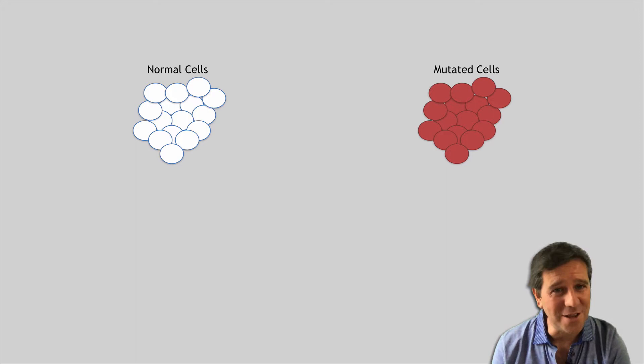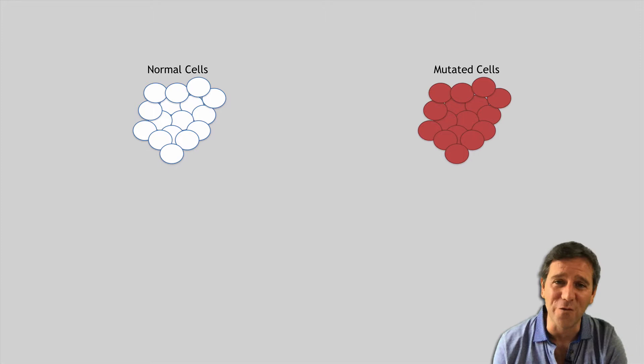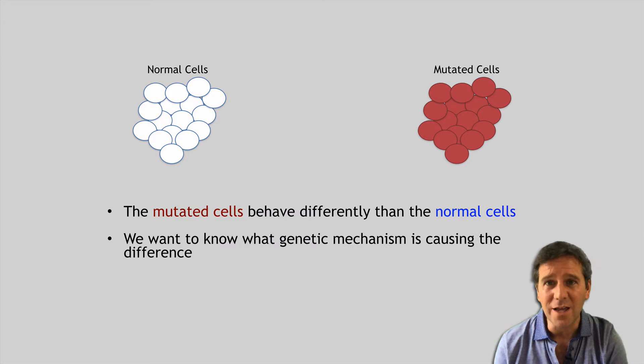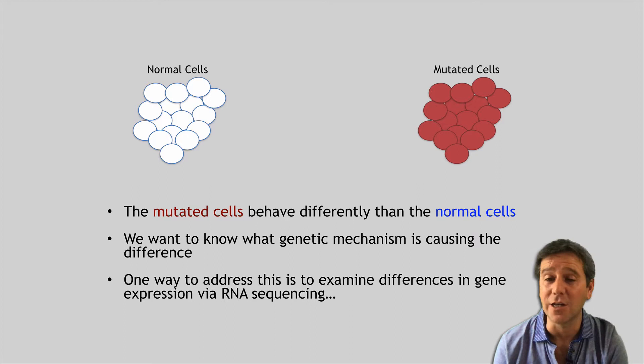Let's imagine we have a bunch of normal cells and a bunch of mutated cells — or if you prefer, drug-treated and control, or disease state and non-disease state — and we're interested in what is different between these two sets of cells that underlies their different behaviour. We want to know why they behave differently, and in particular what are the genetic mechanisms causing this difference. One way to address this is to examine differences in gene expression via a technique like RNA sequencing.